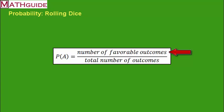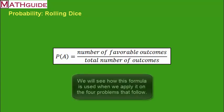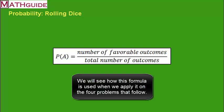In order to do probability problems, it's necessary to know what the definition is. The definition of probability is the number of favorable outcomes divided by the total number of outcomes. Now this formula may seem a bit odd, but as we roll through the following four problems, it'll become much more clear as to how it's used for other types of probability problems.